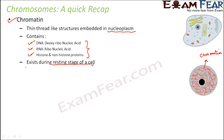These chromatin threads exist only during the resting stage of the cell. In the lifetime of a cell, cells spend a lot of time in the resting stage when the cell is not dividing. In that stage the cell is just growing, maturing, and getting ready to divide. After the resting stage comes the cell dividing phase — mitosis, meiosis, etc. So these chromatin threads are present only during the resting stage when there is no division taking place.